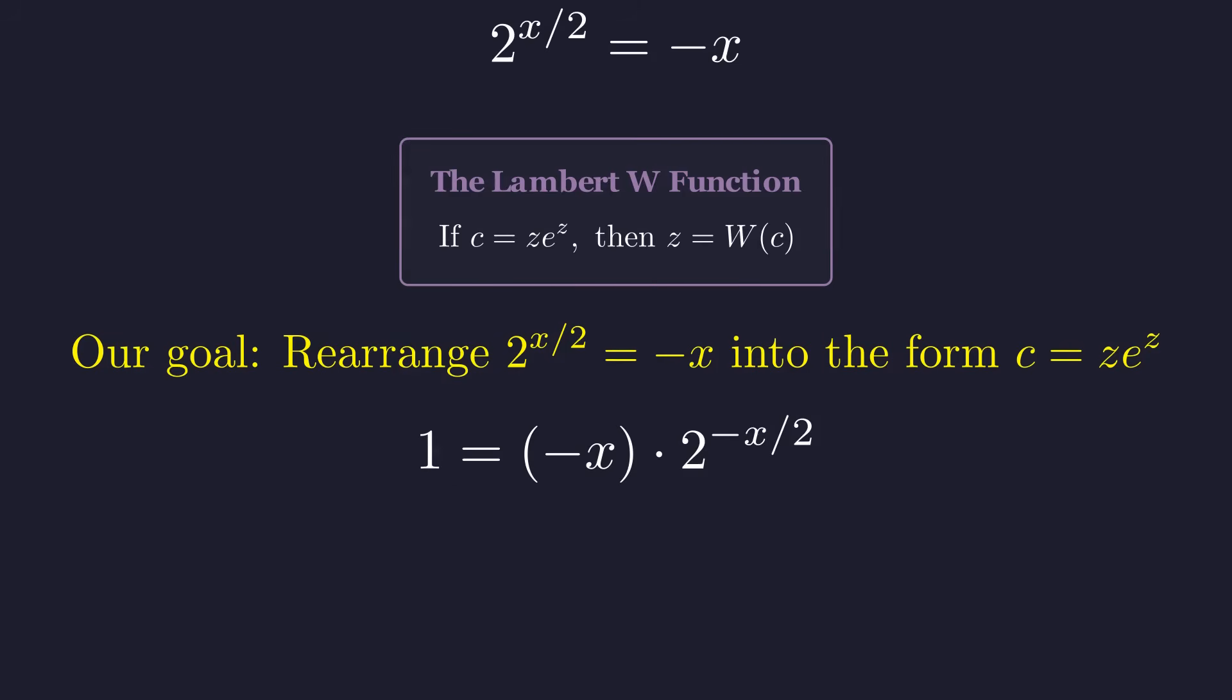Let's start by rearranging. We'll move the exponential term to the right side. The Lambert W function is designed to work with base e, but we have base 2. No problem. We can rewrite 2 as e to the power of the natural log of 2. Making this substitution transforms our equation into the form we need. Using the power rule for exponents, we can combine these terms in the exponent. We're getting closer to our target form.